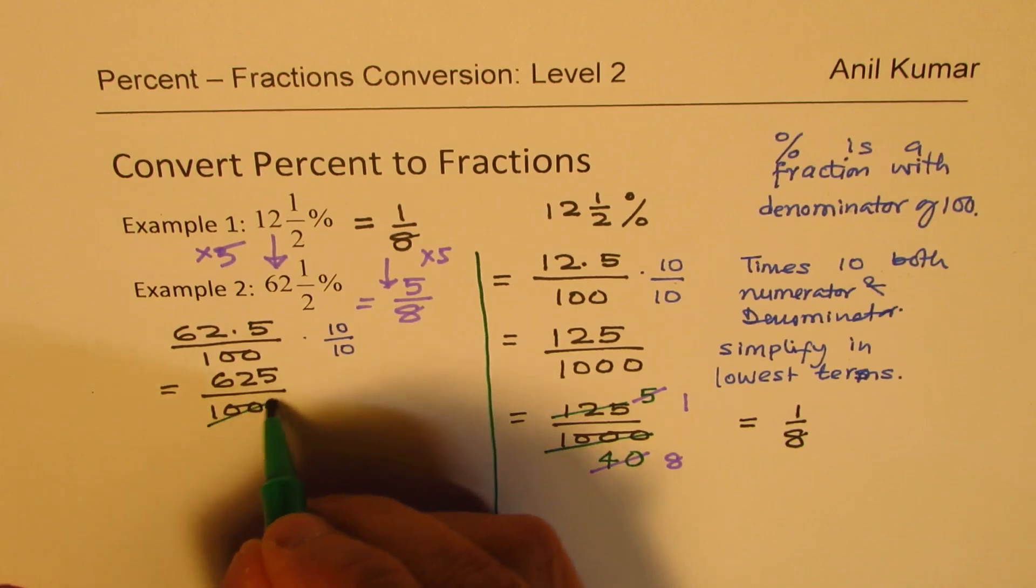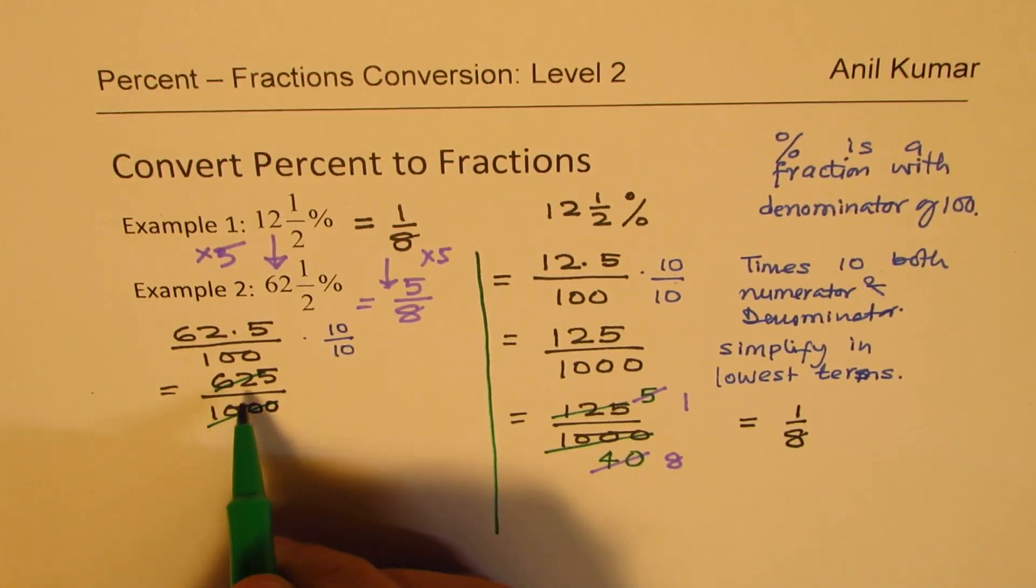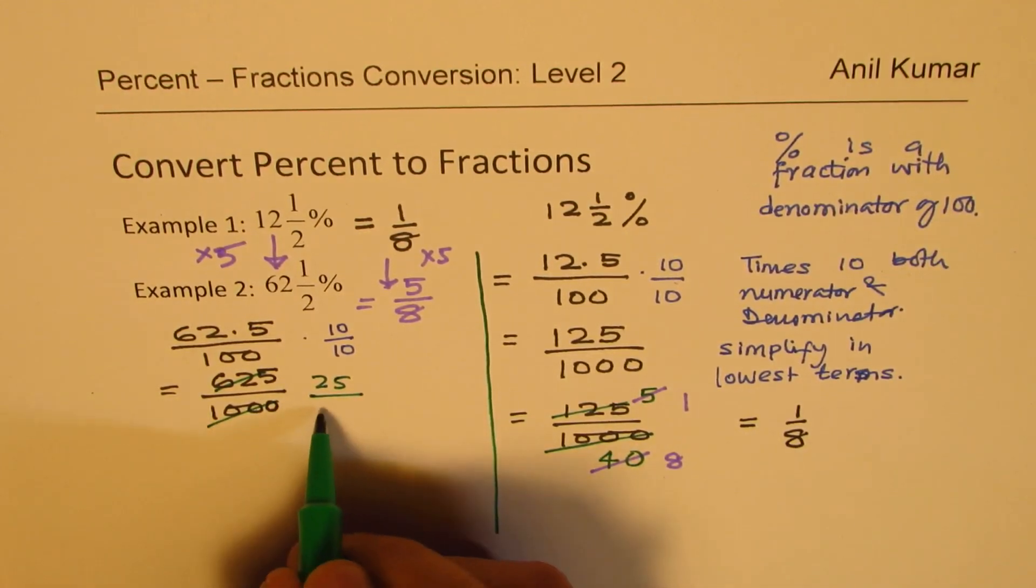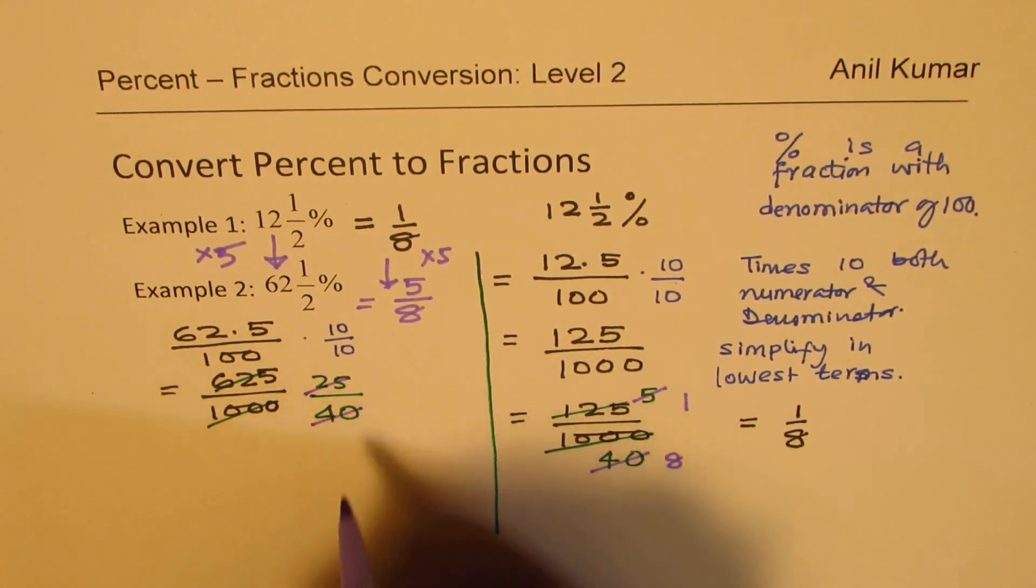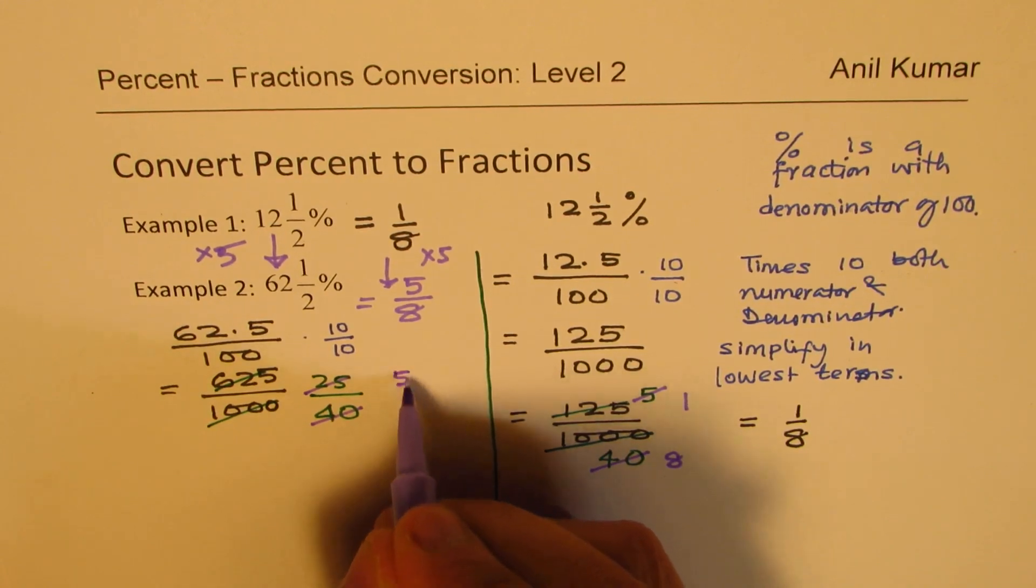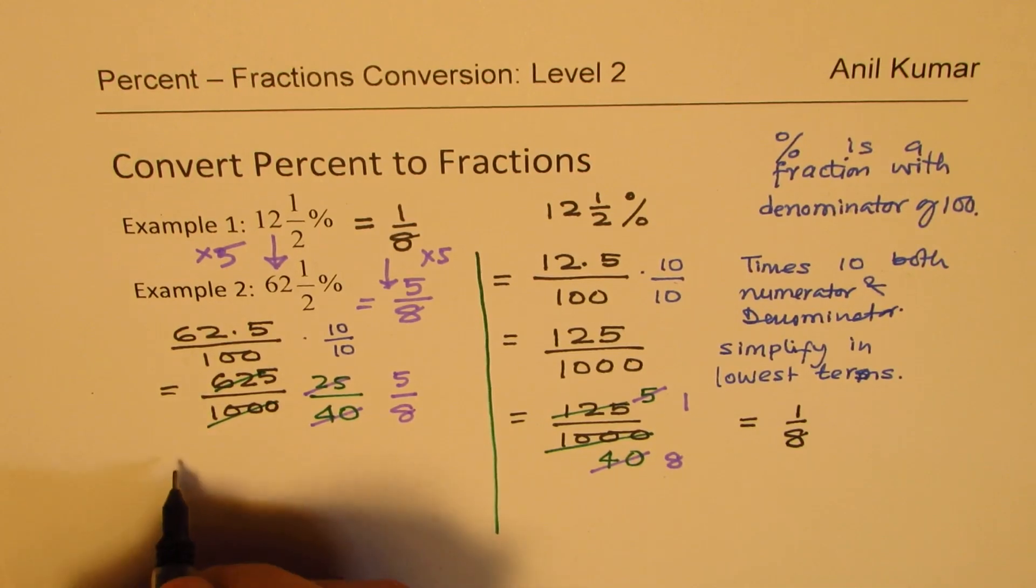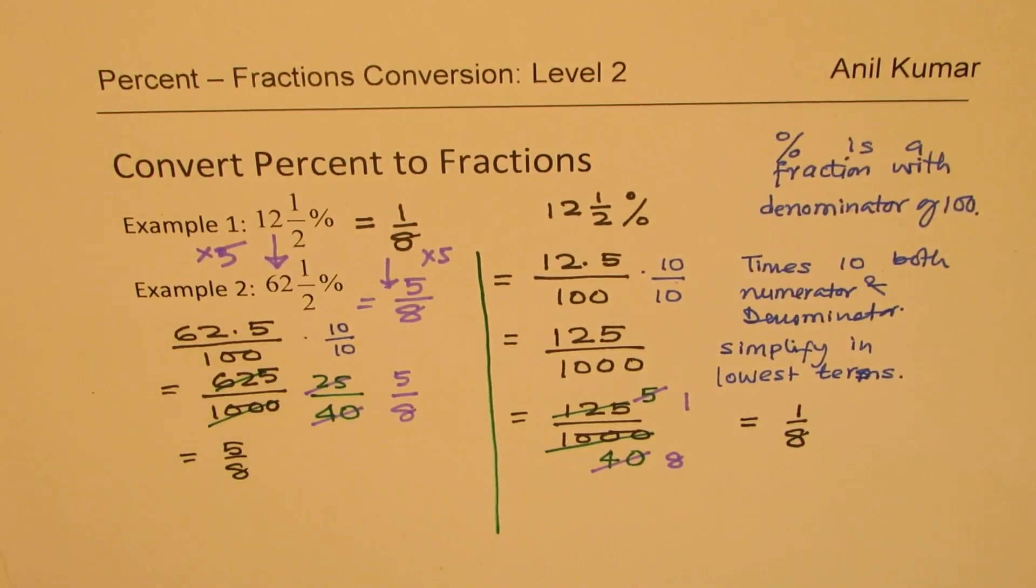And now, we are going to simplify. So when you simplify this, again, we'll divide by 25. So 25, when you divide into this, 25 times 25 is 625 and here you will get 40. Now, this could further be simplified and you can again divide this by 5. So you get 5 over 8. This was expected. So what do we get? We really get 5 over 8 as our answer.